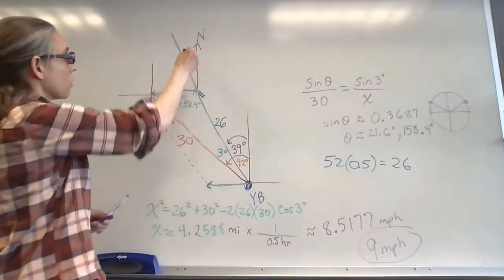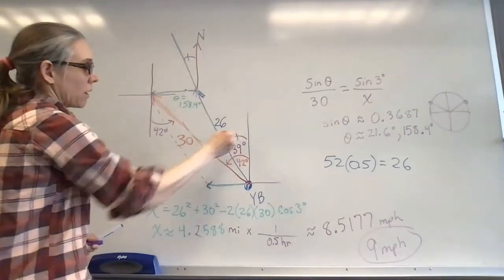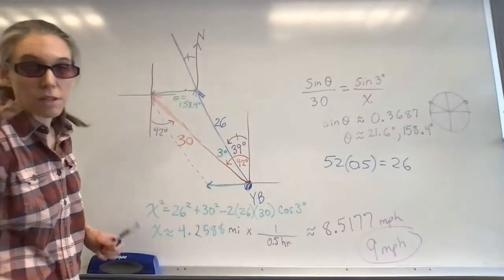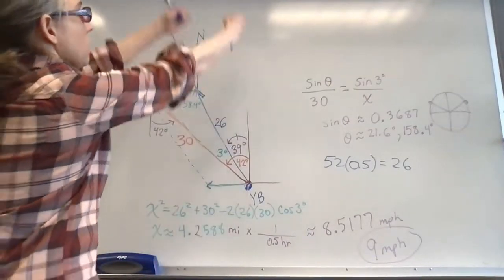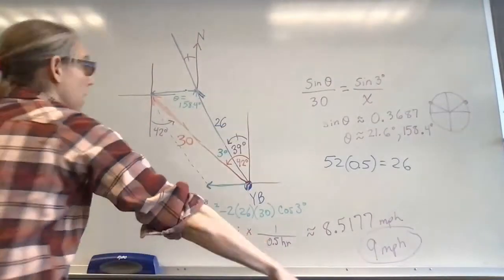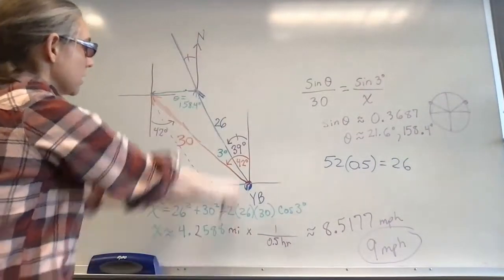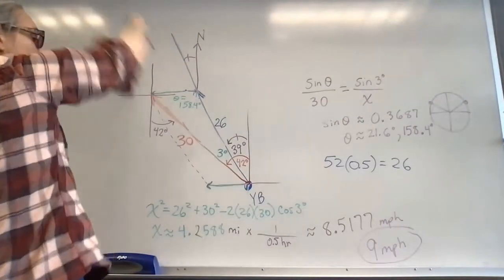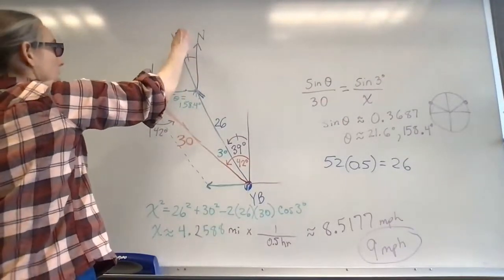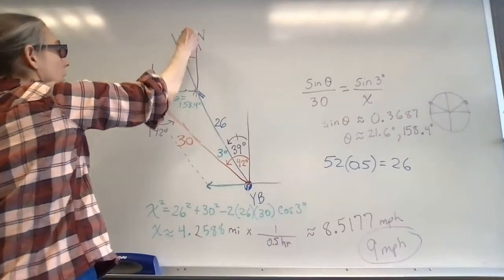Well, this angle right here would have to be congruent to this angle right here because these are corresponding angles. You have parallel lines cut by the transversal. The purple lines are the north lines, and they are parallel. The blue line is the transversal. So this up here is now a 39 degree angle.